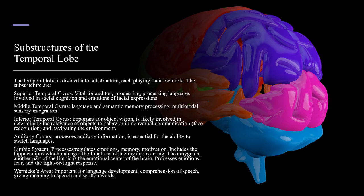The auditory cortex processes auditory information and is essential for the ability to switch languages. The limbic system processes and regulates emotions, memory, and motivation, and includes the hippocampus which manages the functions of feeling and reacting. The amygdala, another part of the limbic system, is the emotional center of the brain — it processes emotions, fear, and the fight or flight response.